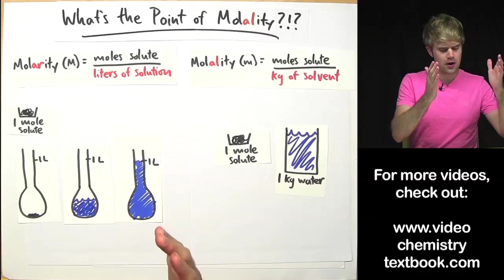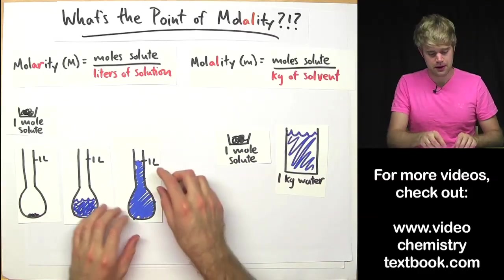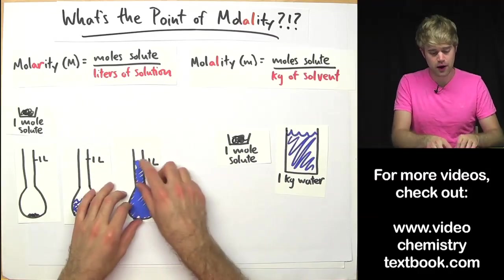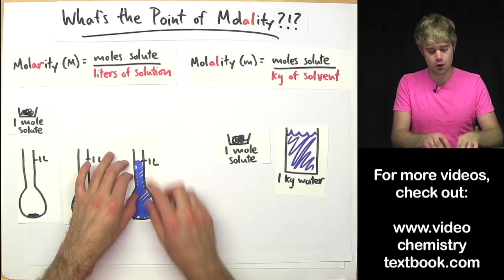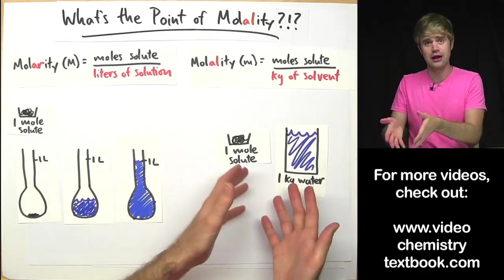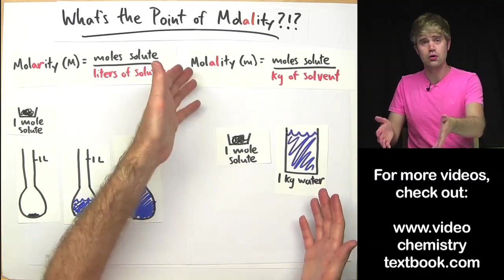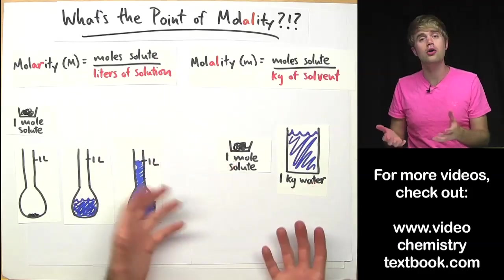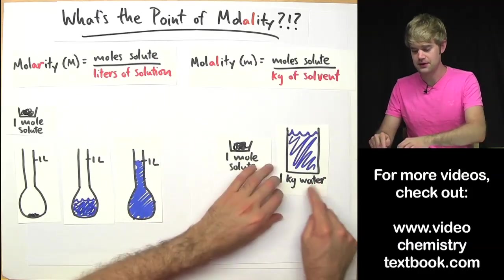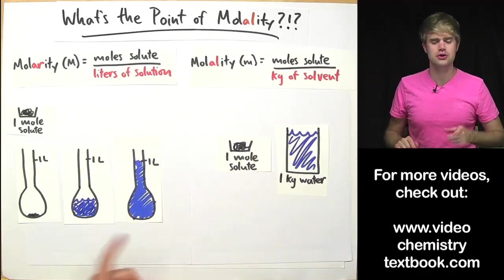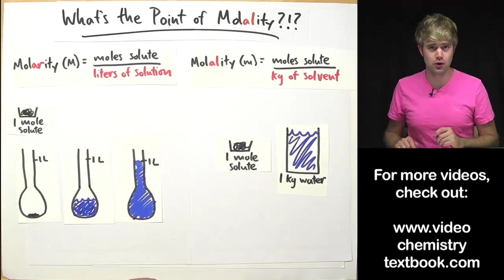So while molar solutions require more steps and special glassware that tells you the volume, one liter here, you don't even need a flask or a beaker to do a molal solution. All you need is a scale to weigh out the solute and the solvent and then mix them together. So that is one advantage of molality.